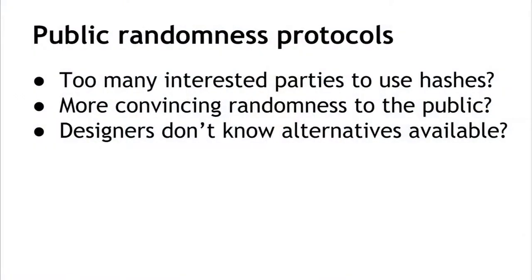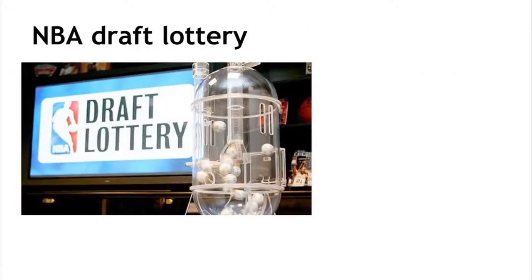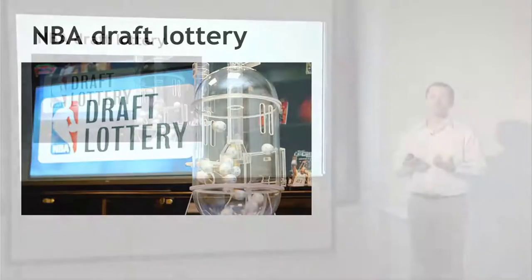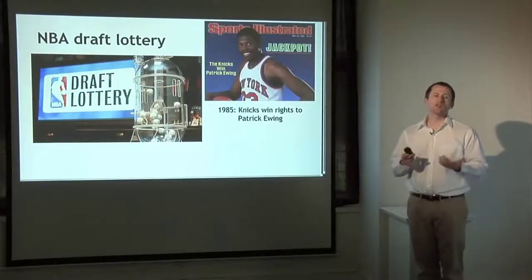We showed how multiple people can have a secure lottery on Bitcoin where each provides randomness combined to get group randomness, using timed hash commitments to make the process fair. Now we'll talk about using Bitcoin to generate public randomness — the same situation but maybe with so many participants it's impossible to have everybody send randomness in. What do I mean by a public randomness protocol? One example that happens every spring is the NBA draft lottery, where all 30 teams randomly choose — with weighting based on the previous season — who gets to draft the top amateur player.